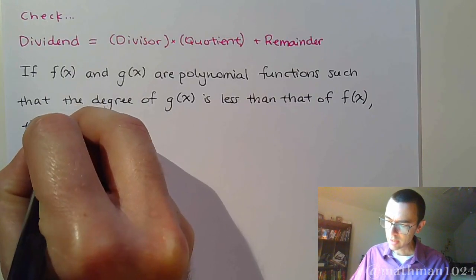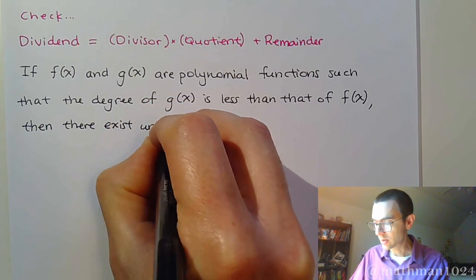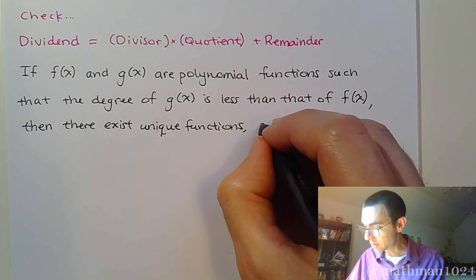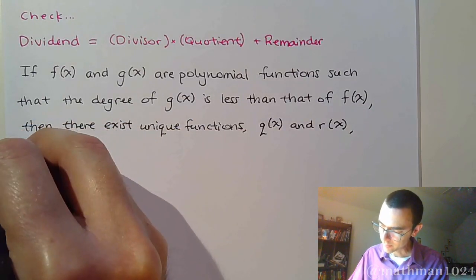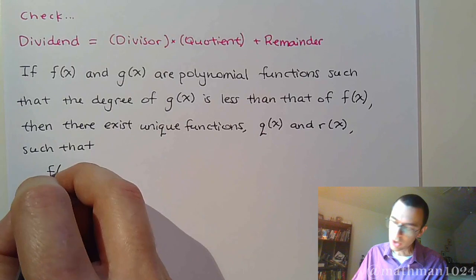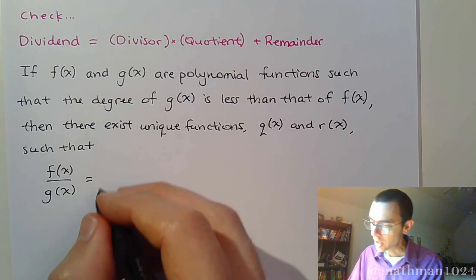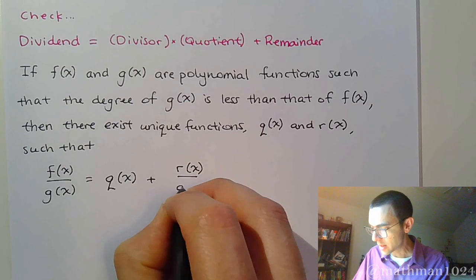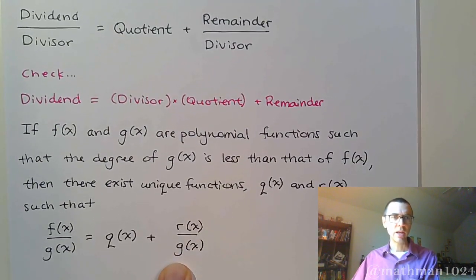Then there exists unique functions. There exists unique functions, and we'll call them q of x and r of x, such that when you take f of x divided by g of x, you're going to get this unique relationship. You're going to get one function plus you're going to have another function over that divisor. And what we're saying right here is the same thing that I have at the top of the screen right now.